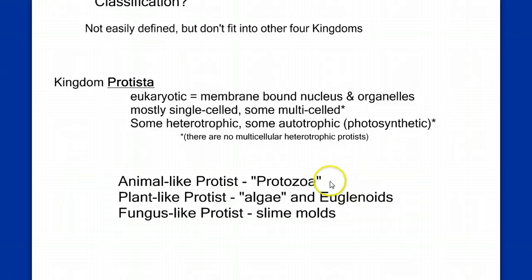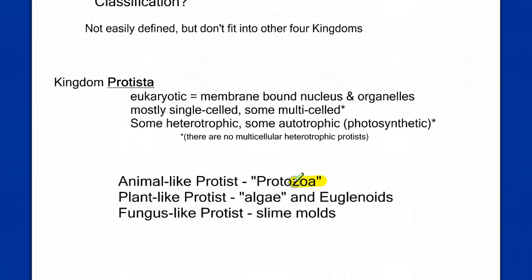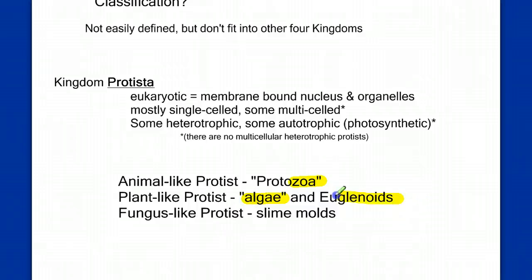For example, the protozoa, or the animal-like protists. Notice the 'zoa' meaning animal, 'proto' meaning early version. These animal-like protists may have given rise to some generic multicellular animal-like creature that eventually gave rise to animals. And then we have the plant-like protists, or the algae. We're also going to include the euglena, or the euglenoids. They're plant-like in that they photosynthesize.